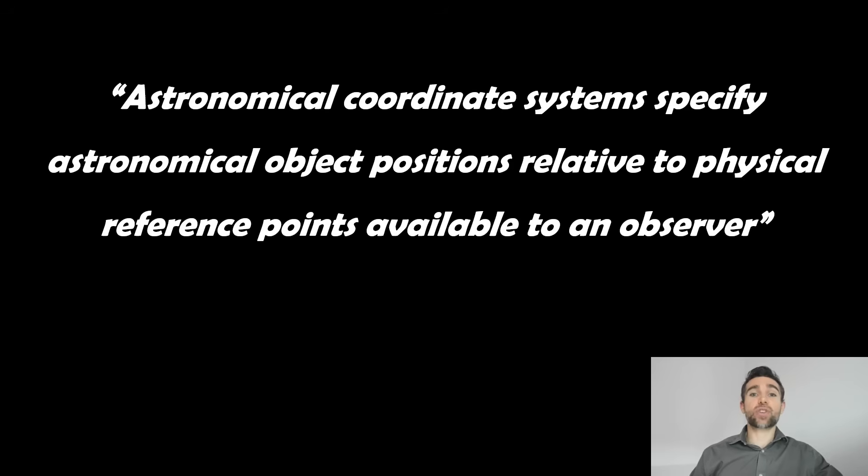With astronomical coordinate systems, these specify astronomical object positions relative to physical reference points available to the observer. In this case here, we're going to be on the surface of the Earth, and we're going to use the zenith and the nadir as reference points for looking in the night sky.